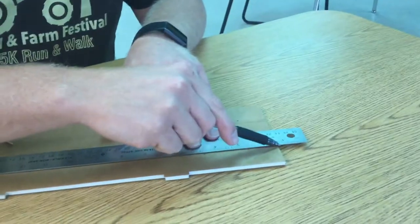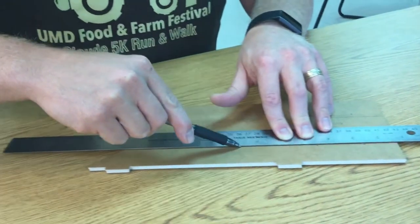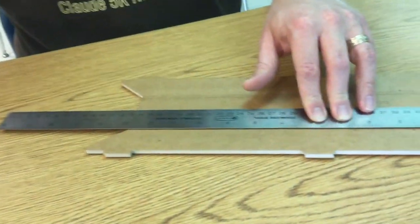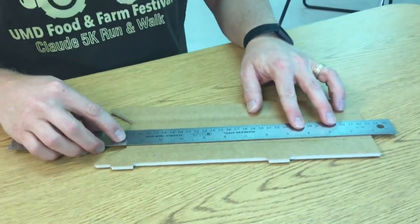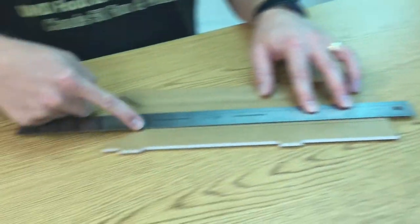You would run your knife right along this line that we drew, cutting through about half of the thickness. You would do the same thing for this second line 3/16ths of an inch away, cut through about half of the thickness.